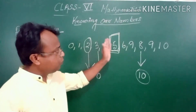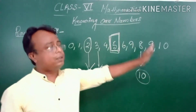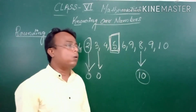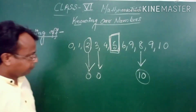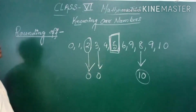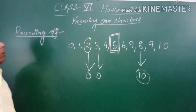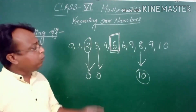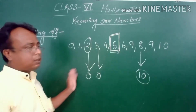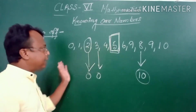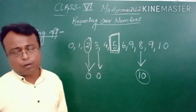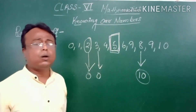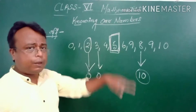0 and 10 are the same distance from 5. Although this 5 lies equidistant from 0 and 10, in this case, commonly what we do — to know the rounding up, you should know about the place value.